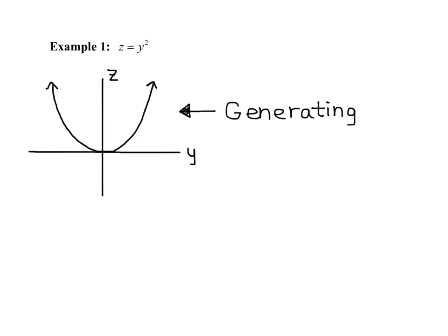Here's our first example, z equals y squared. And what we want to do is think about what the generating curve looks like. It looks like a parabola on the y-z axis, z equals y squared. So this is called our generating curve.